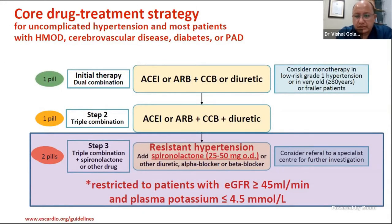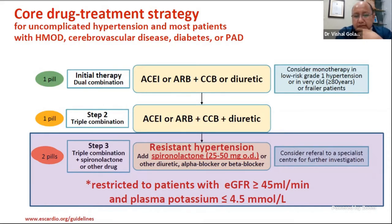Most blood pressure medicines bring down blood pressure by around 5 to 10 mmHg, so the number of drugs needed can be roughly estimated by the level of elevation above the upper limit of normal. If blood pressure is very high, we can start with combination therapy. Per most guidelines, we start with one of three drug classes as first-line therapy and combine them until we reach triple combination.